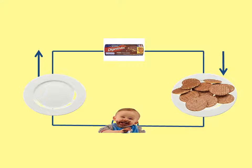Here's the next model: there are digestive biscuits at the top and a plate going round a sort of circuit. The plate on the right has biscuits on it, and as it goes round it passes through a child at the bottom who eats the biscuits. The plate is empty on the left side until it's refilled at the top again, and it continuously goes round. Pause the video and think about what each part represents. The plate represents the charge, the packet of biscuits at the top is the battery, and the biscuits on the plate represent the energy.